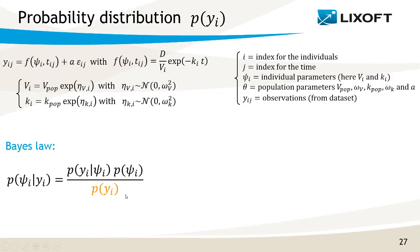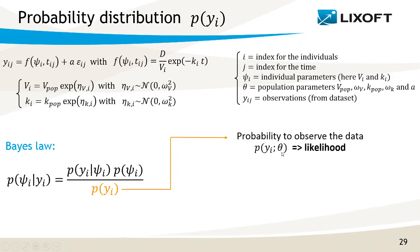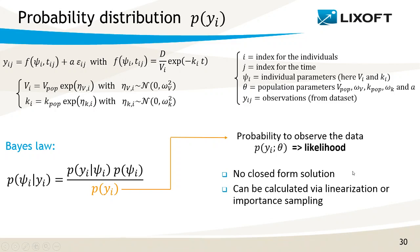Finally, the last term is the probability to observe the data at hand, given the population parameters theta — this is actually the definition of the likelihood. When optimizing the population parameters theta, I am looking for the theta value that gives the highest probability to observe the data in my dataset. The likelihood has no closed-form solution. In Monolix, we have two different ways to calculate it: either via linearization or via importance sampling. This will be the topic of a future video. Now you know all about the probability distributions we work with in Monolix.